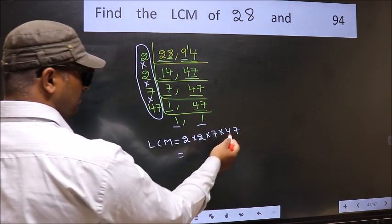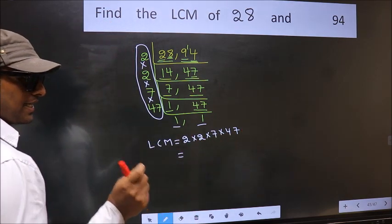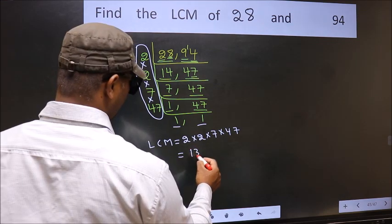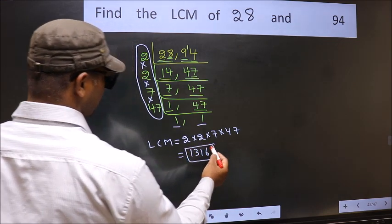When we multiply these numbers, we get 1316. This is our LCM.